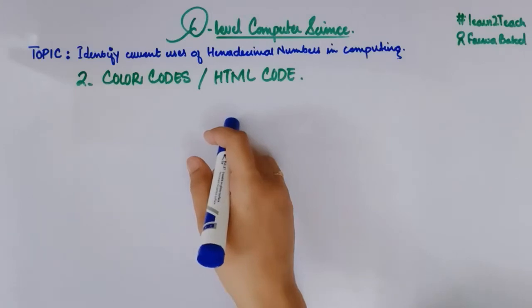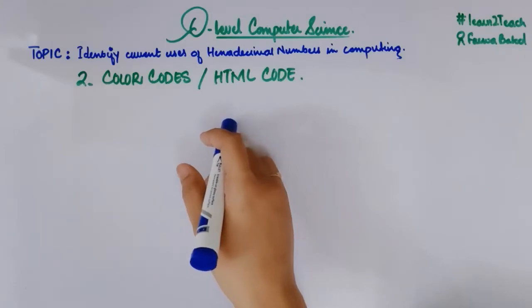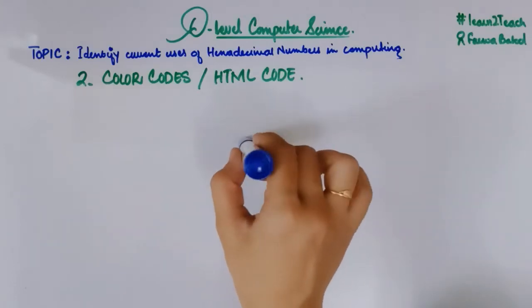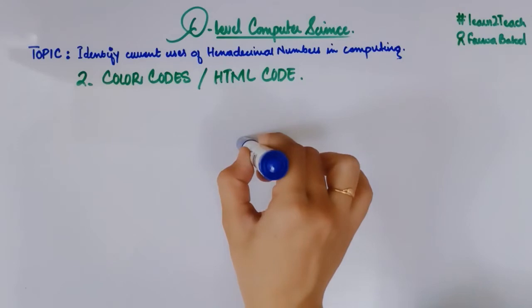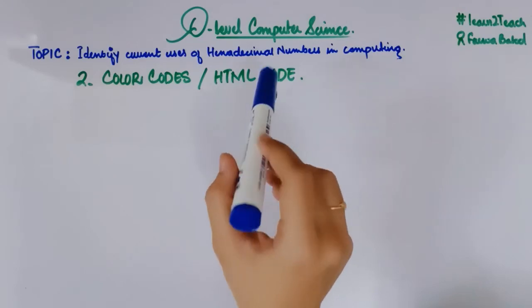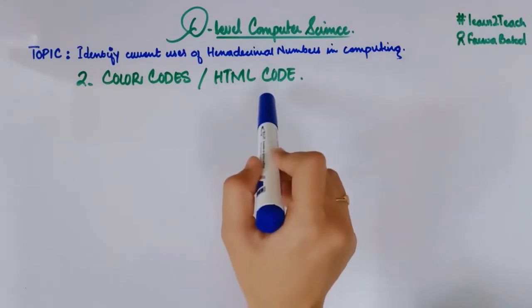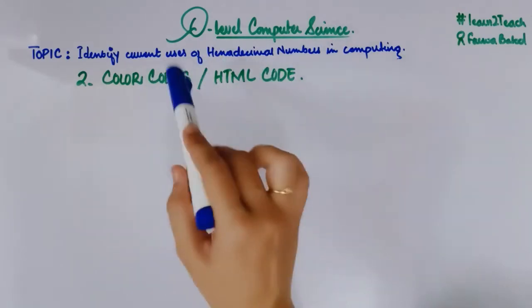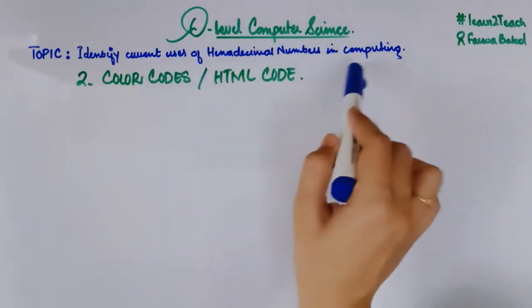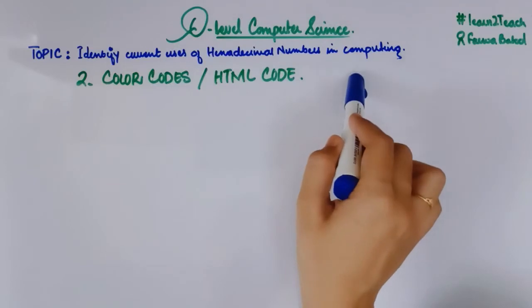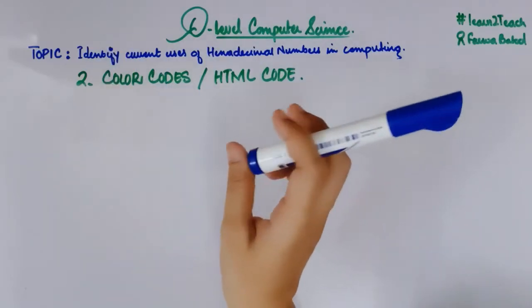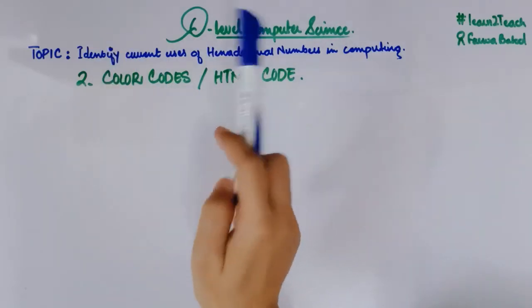Hello everyone, this is your instructor Farwa Batool and welcome to the course of O-level computer science. Since we were looking at the uses of hexadecimal numbers in computing, the first use was memory dumps, and this is the second use: color codes or HTML codes.